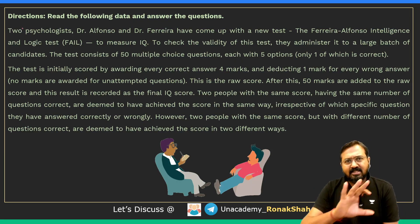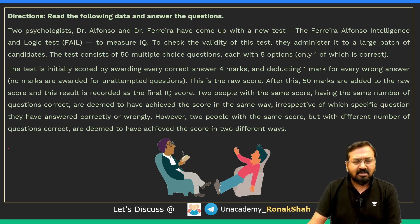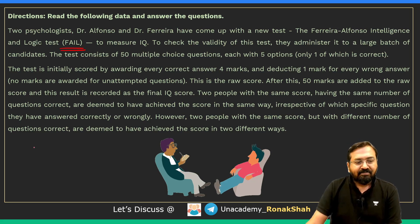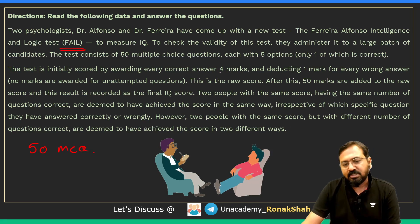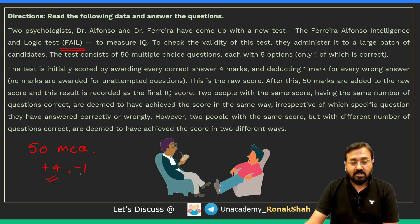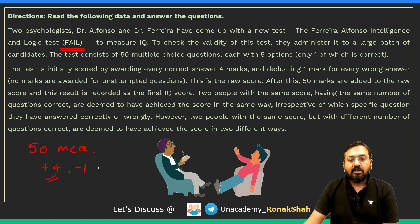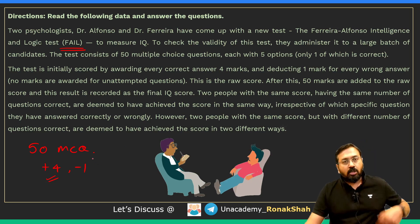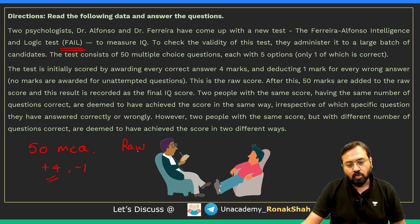So it's a nice tricky set — a similar set has been asked in CAT and other exams earlier. It's about a special test called FAIL test. It has 50 multiple choice questions, each question has four options, and the marking scheme is plus four, minus one. So if someone answers correctly they get four marks, and if it's a wrong answer then one mark will be deducted. Whatever score you get is called a raw score.